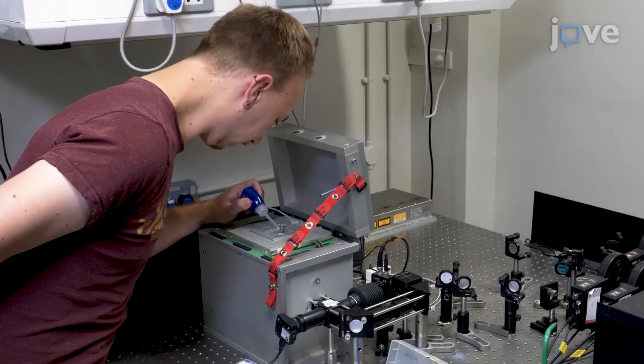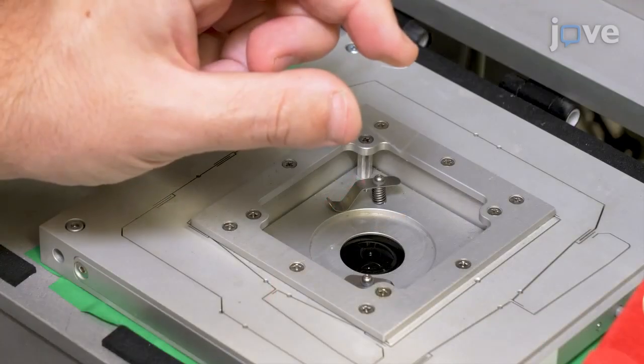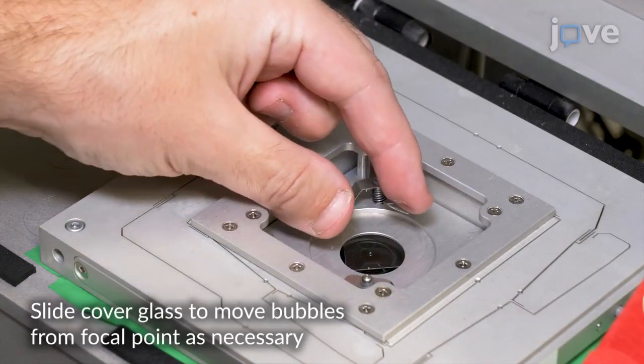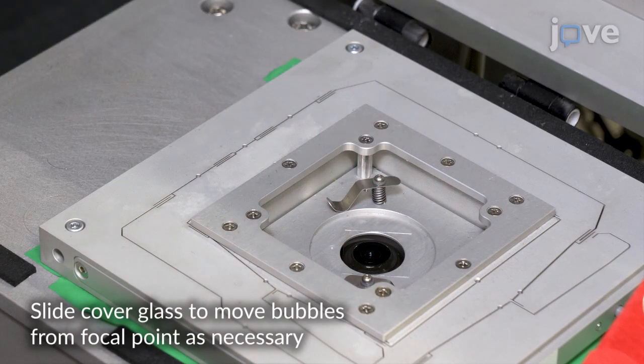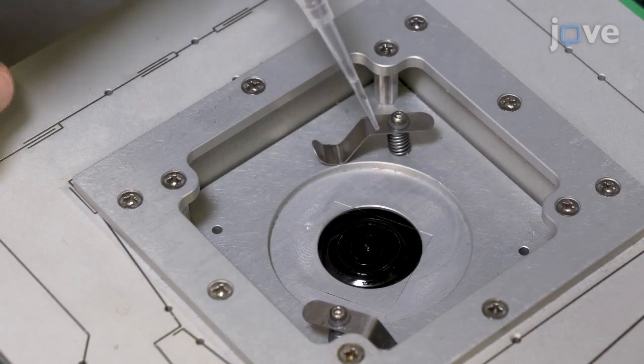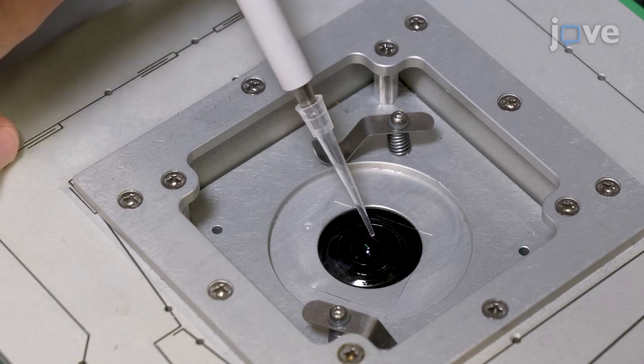To align the emission path, place a drop of immersion oil onto the objective and carefully place a clean cover glass onto the objective lens, lowering at an angle to the oil to prevent trapping air bubbles between the cover glass and the objective. Then, add 10 µl of 100 nm psi 3b dye onto the center of the cover glass.